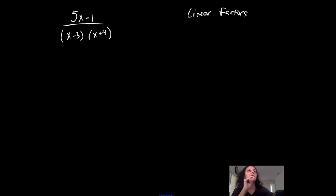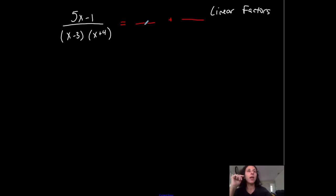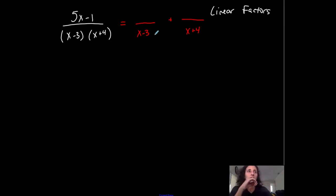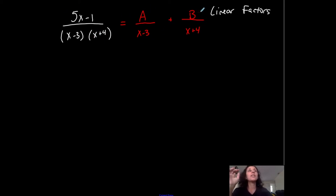When I have non-repeated linear factors, I'm going to say this is equal to a sum of separate fractions. One denominator will have x minus 3, and the other will have x plus 4. When you have linear factors in the denominator and they're different, your numerators are constants. I don't know what those constants are, so I'll call them unknown A and unknown B — a different constant per different linear factor.